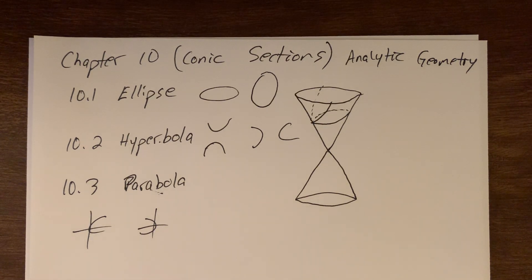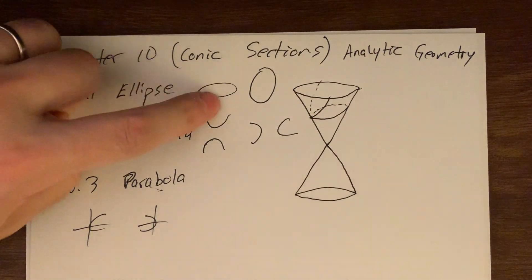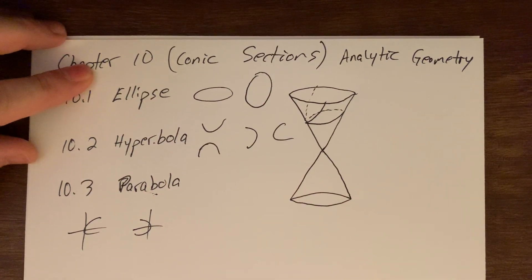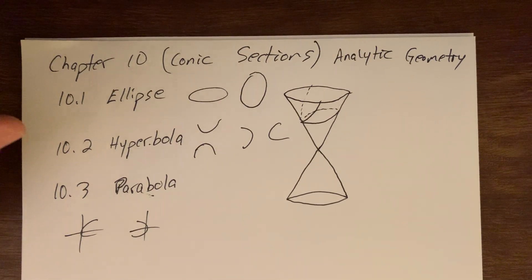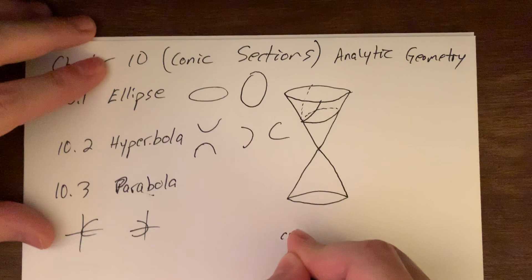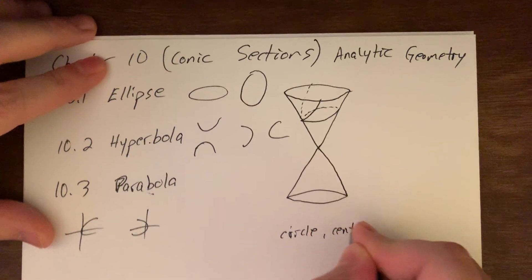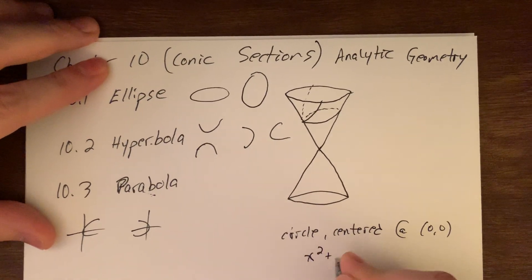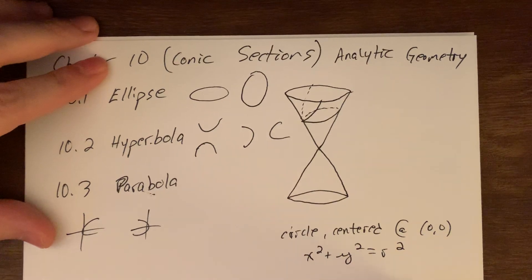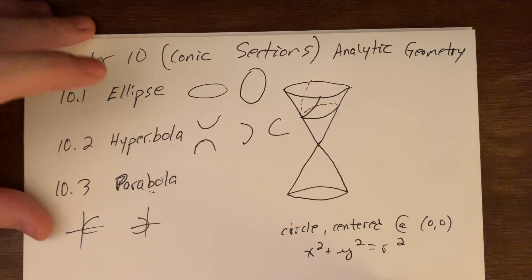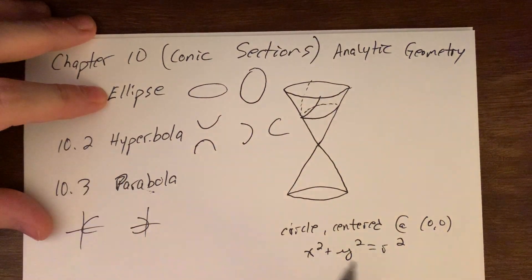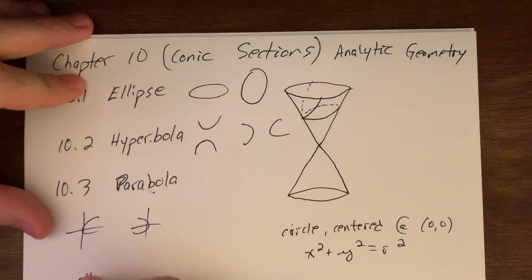Now let's get a little deeper and start getting into the formal equations. Ellipses are very much like circles and have a very similar equation. I'll remind you first, thinking about centered at the origin: a circle centered at the origin has the equation x² + y² = r². Well, a circle is a special case of an ellipse, so our ellipse formula must be very similar.